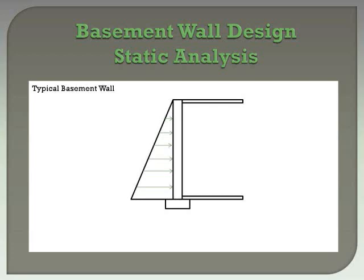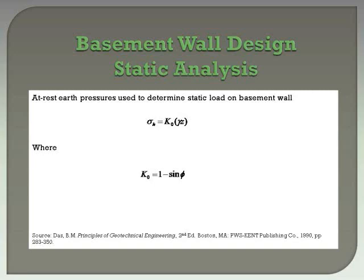Now we will look at another type of retaining wall commonly designed by the structural engineer: the basement wall. As can be seen in the typical basement wall shown, it is supported at the top and the bottom, and thus it cannot move relative to the soil, and therefore is termed a non-yielding wall. Since the basement wall does not deflect, active and passive wedges will not develop. Therefore, we must use the at-rest earth pressures to determine the static load applied to the basement wall, found using the at-rest coefficient of earth pressure, or K sub zero.